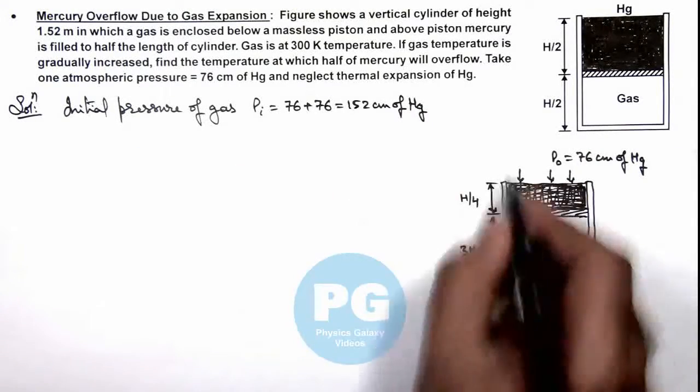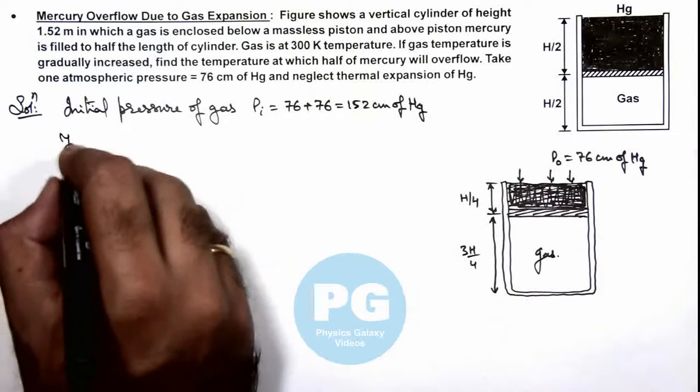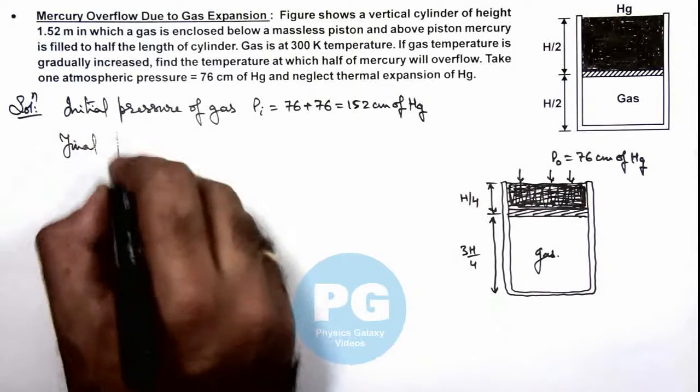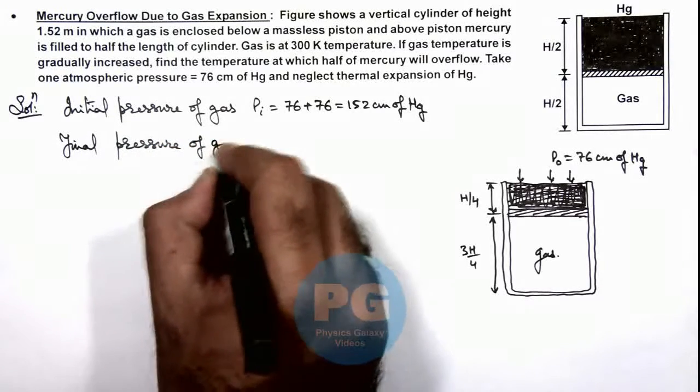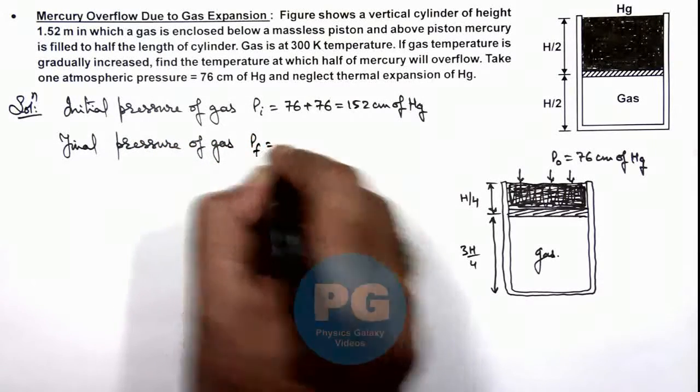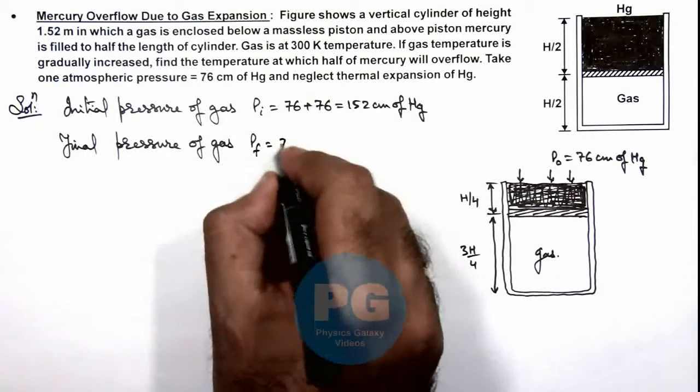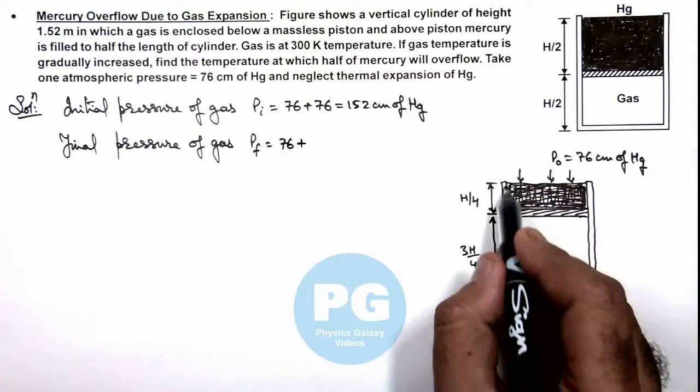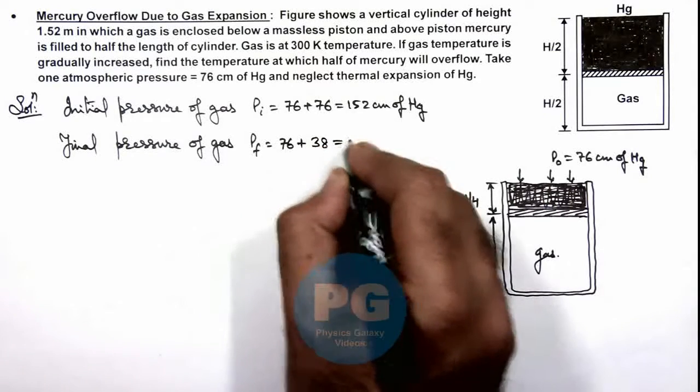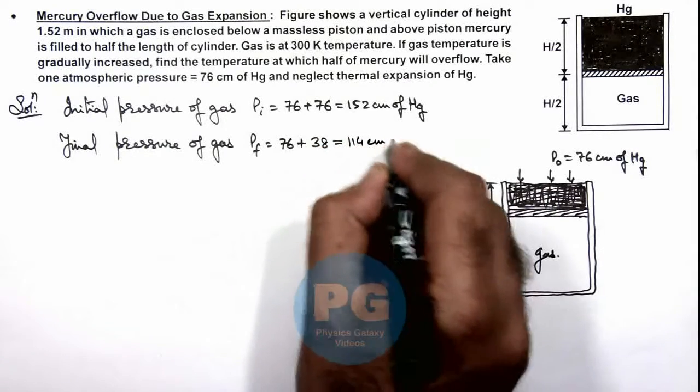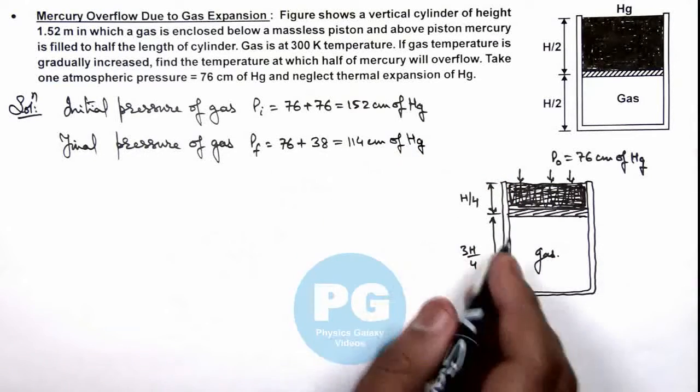When half of mercury overflows, we can directly write the final pressure of gas as P final is 76, the atmospheric pressure, plus now it is half of 76 which is 38, so this is 114 centimeters of mercury, which is the gas pressure in final state.